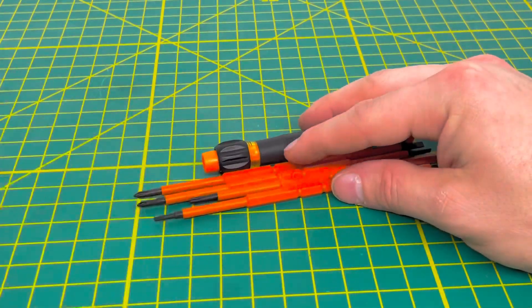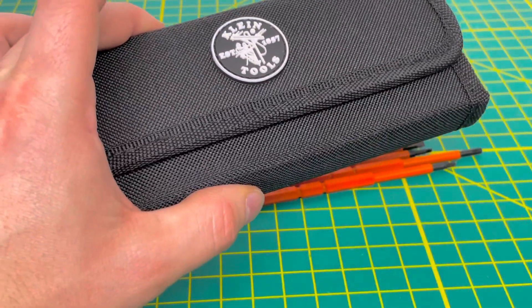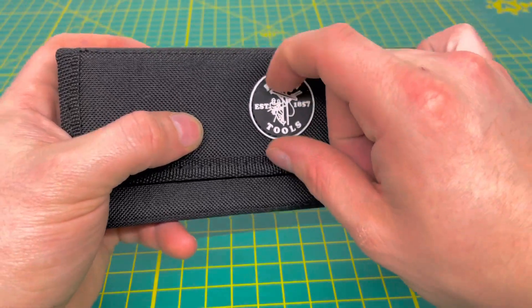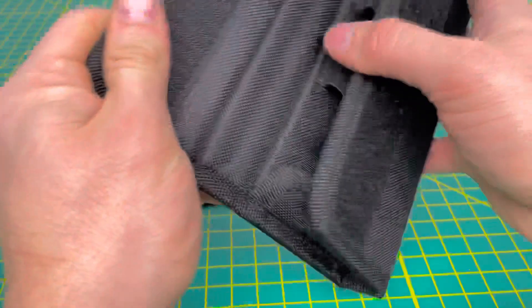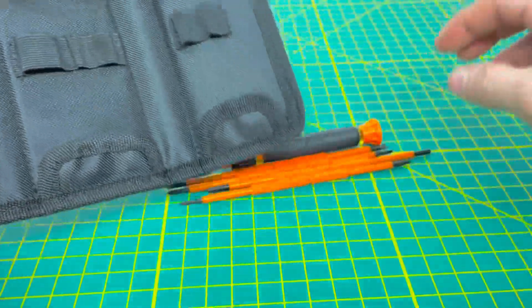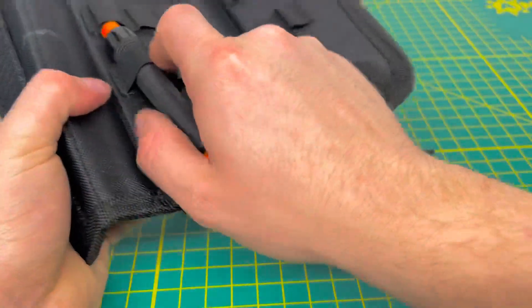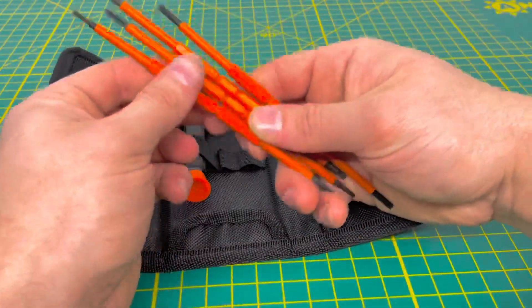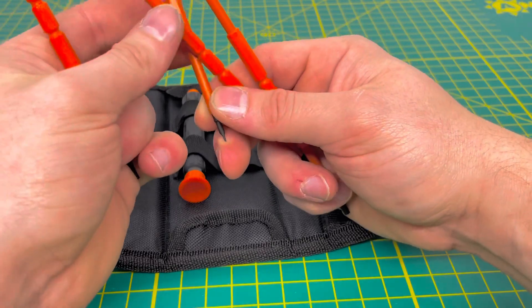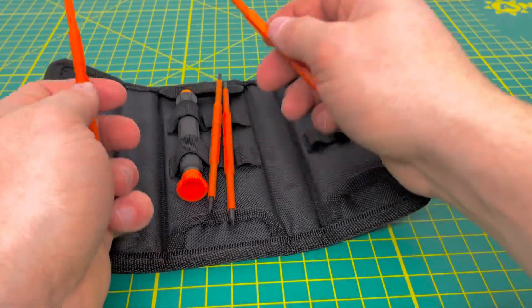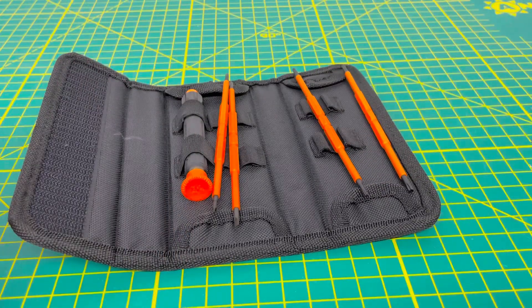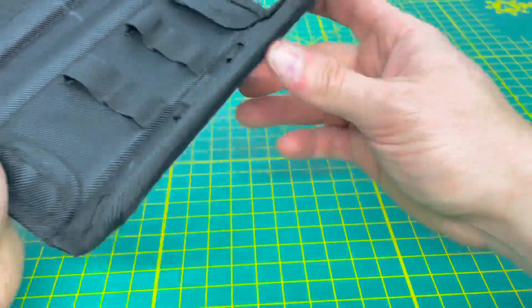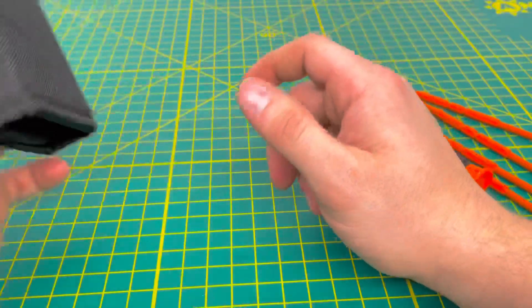One cool feature is it comes with a carrying case. It's velcro with this nice Klein logo, a rubberized logo on the front which I really like. When you open it up, there are different slots for your screwdriver. This one is where your handle goes. You can set this up however you want - I'll keep my Phillips and slotted bits on that side and Torx on this side. It's a nice little carrying case to keep this in decent shape.